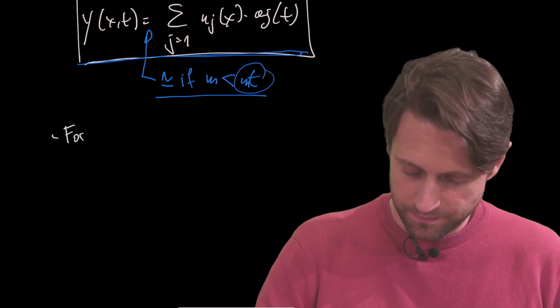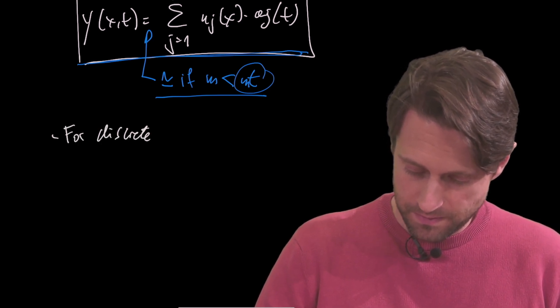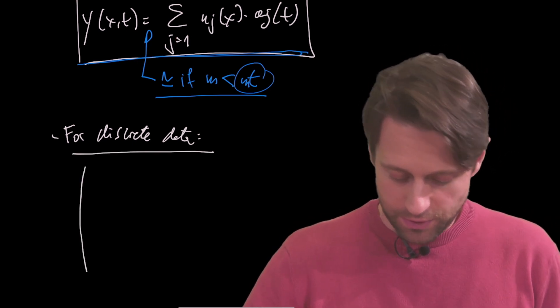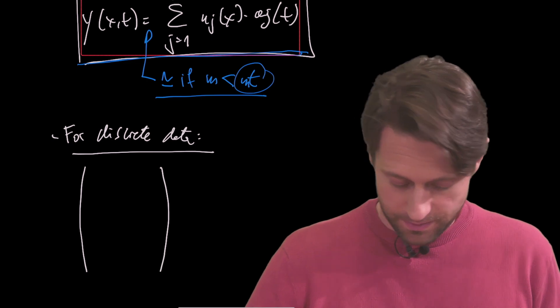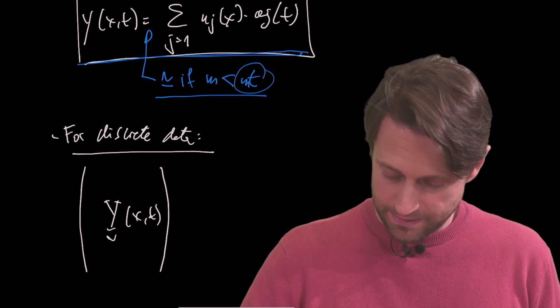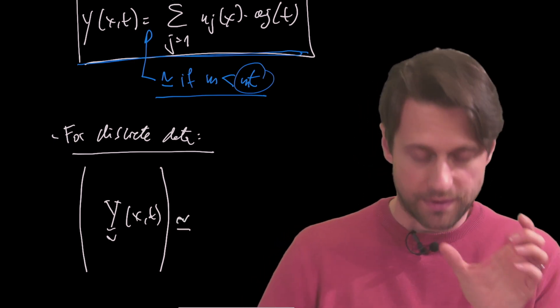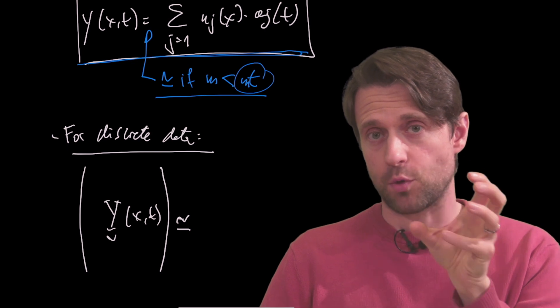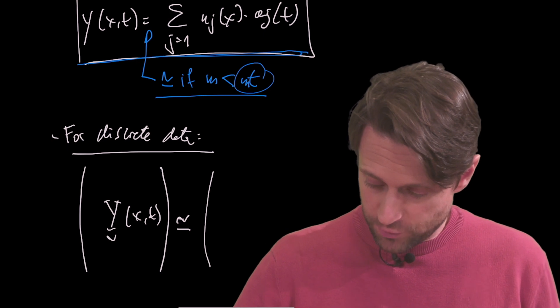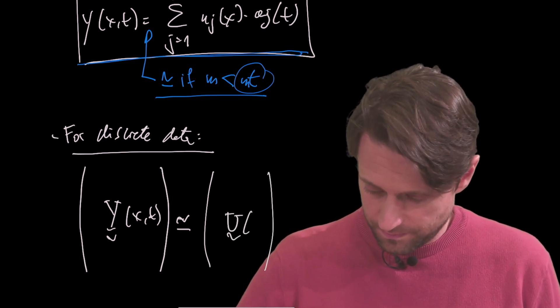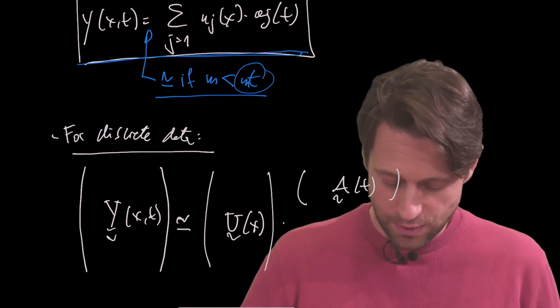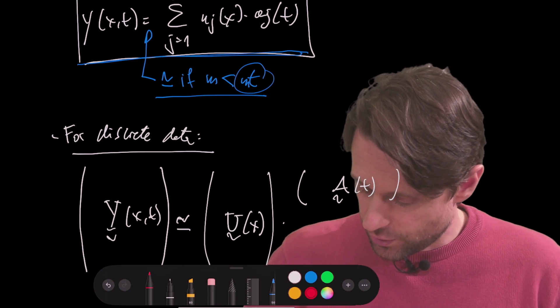So for discrete data, what I have is, and now I'm going to express it in terms of matrices, so I have my data capital Y which depends on space and time, and this is now approximate. We're going to approximate it with some dimensionality m. So m is smaller than number of snapshots in time. This would be now my matrix U of x, and this is now multiplied by the temporal coefficients, which are contained in the matrix A of t.